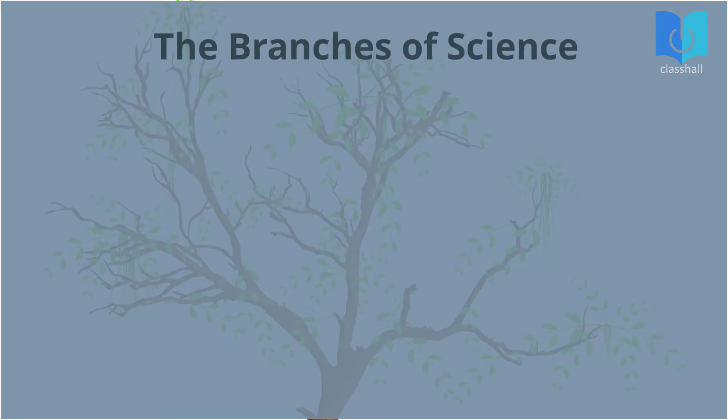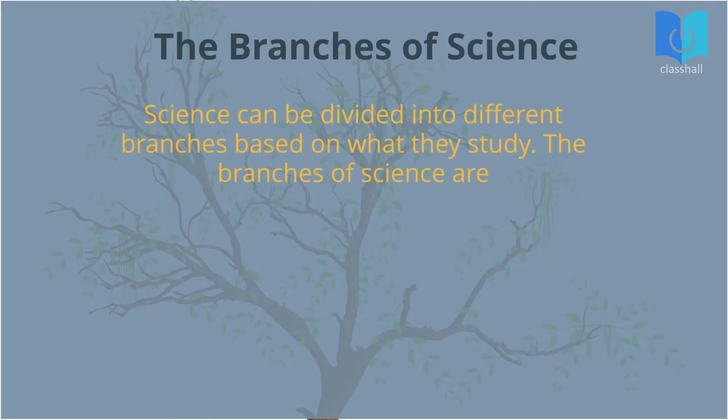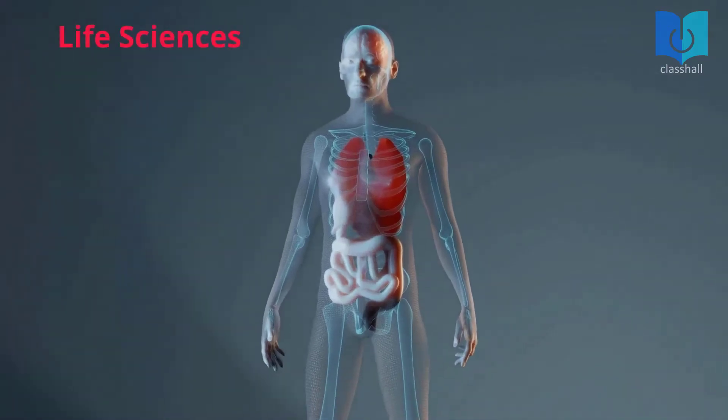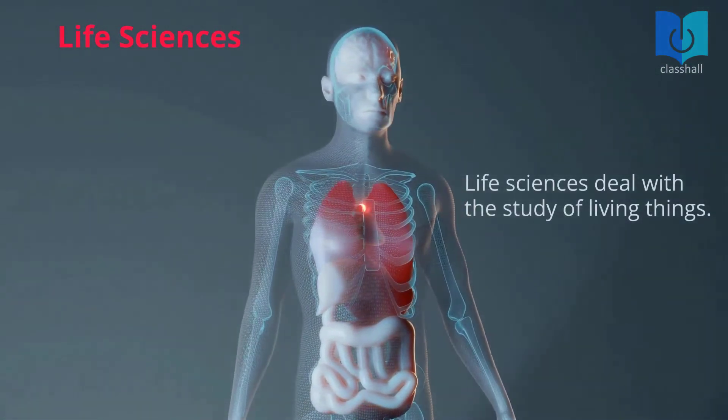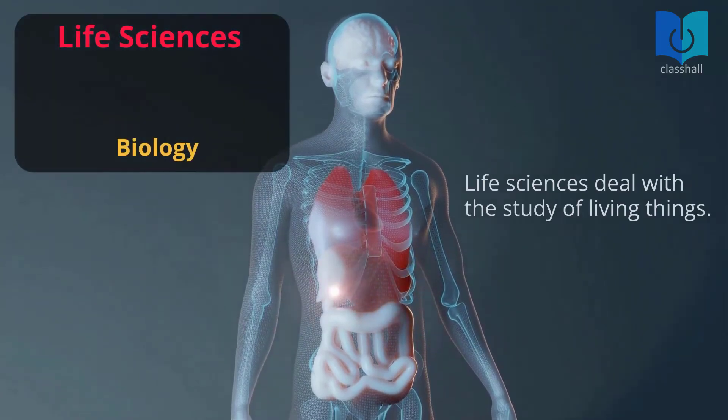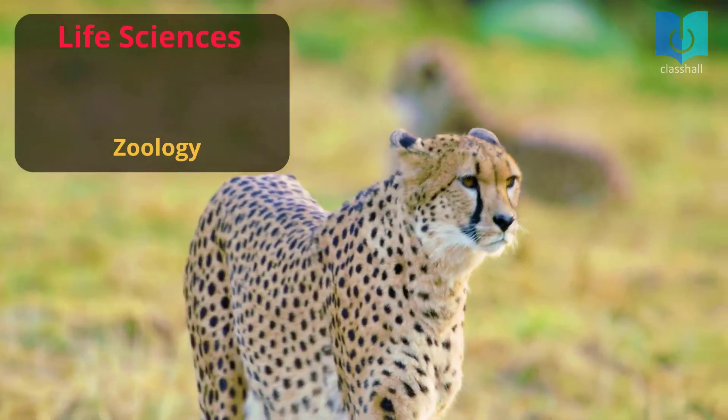Science can be divided into different branches based on what they study. The branches of science are: 1. Life sciences. This area deals with the study of living things, e.g. biology, botany, zoology, etc.